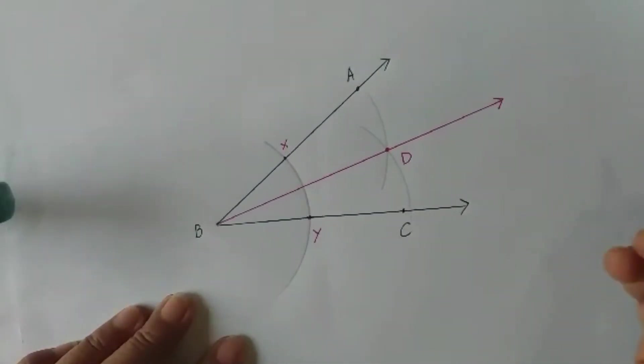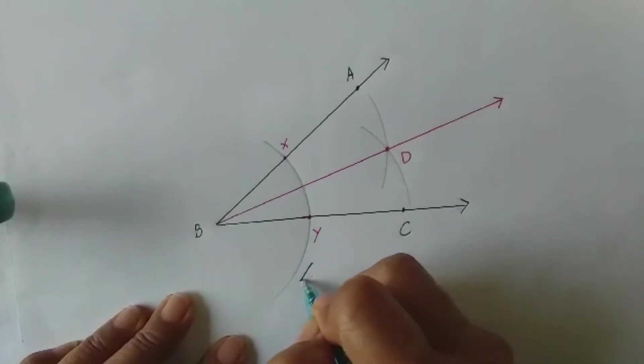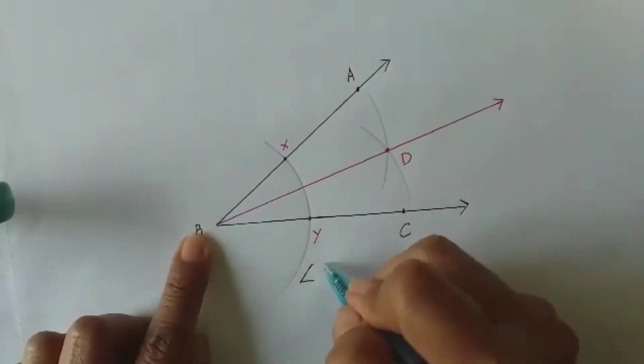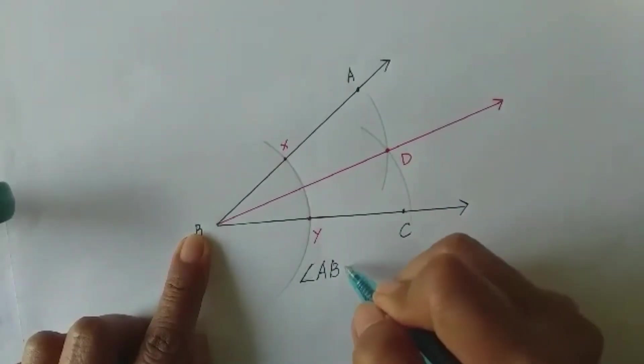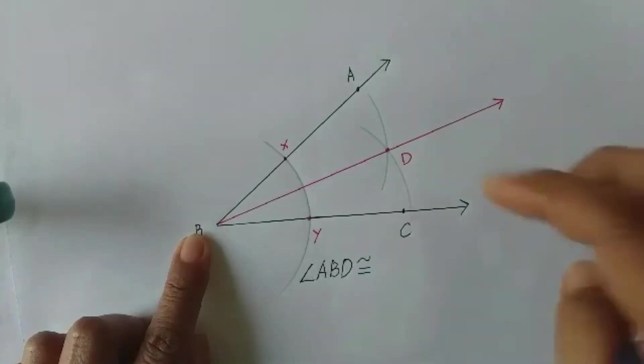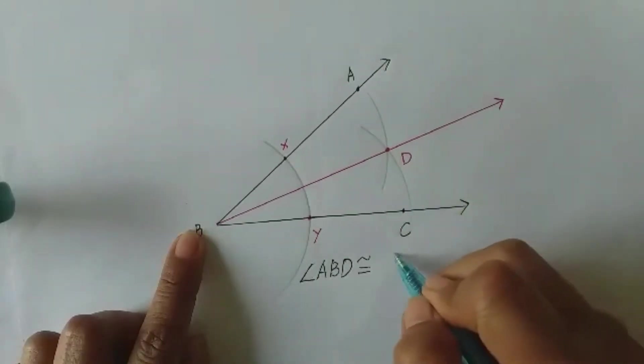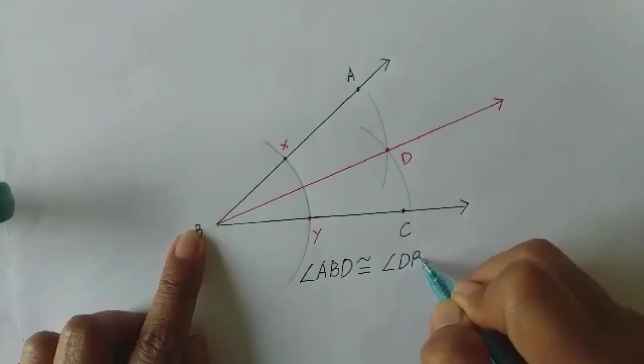There you go. So angle ABD measures also 20 degrees. Okay, so angle ABD is congruent, that's the symbol, to angle DBC.